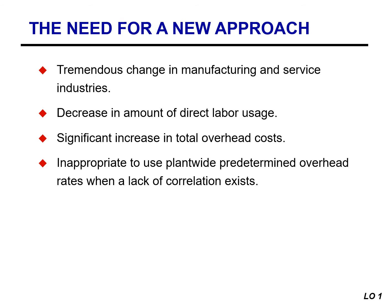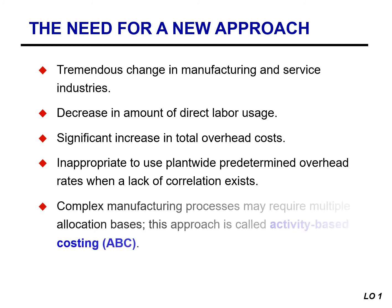Companies that use overhead rates based on direct labor, when this correlation does not exist, experience significant product cost distortions. To minimize such distortions, many companies began to use machine hours instead of labor hours as the basis to allocate overhead in an automated manufacturing environment. But even machine hours may not serve as a good basis for plant-wide allocation. For example, product design and engineering costs are not correlated with machine hours, but rather with the number of different items a company produces. Companies that have complex manufacturing processes need to use multiple allocation bases to compute accurate product cost. This approach is called activity-based costing.